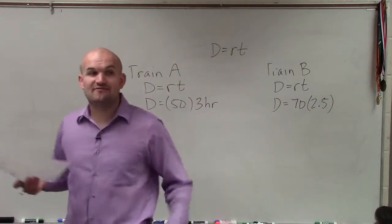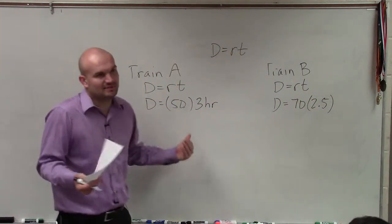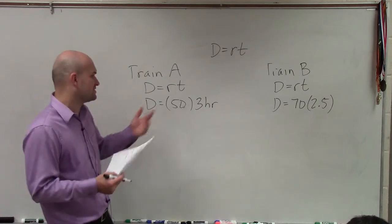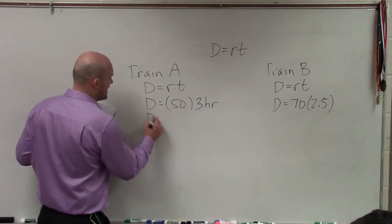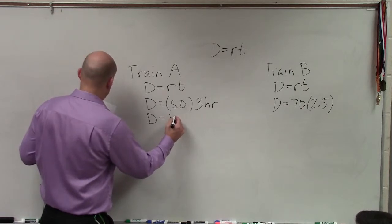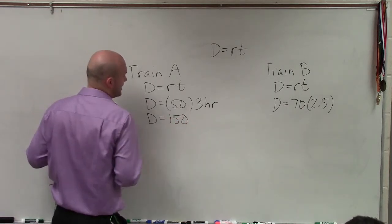So basically, to find the difference between the two, all we simply need to know that difference, we'll actually just figure each one out. So therefore, the distance for train A is 150 miles.